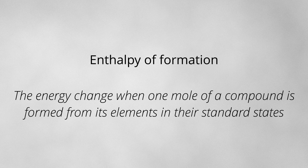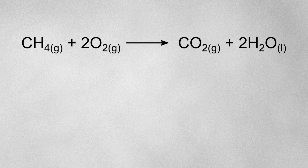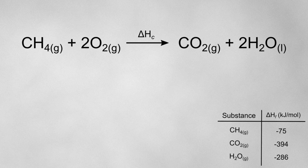The first type of Hess' cycle I'm going to show you is one that uses formation enthalpies. The definition of the formation enthalpy is the energy change when one mole of a compound is formed from its elements in their standard states. Let's take a look at this reaction showing the complete combustion of methane in oxygen. We can calculate the enthalpy of combustion for methane by setting up a Hess' cycle with given enthalpies of formation.